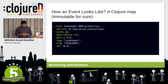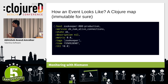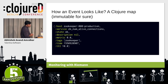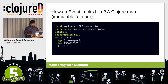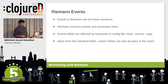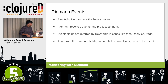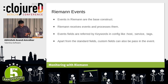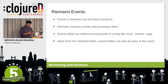This is a simple Riemann event and how it looks — it's a Clojure map, and it's immutable. Events are the base construct in Riemann. Riemann receives events and processes them. Event fields are referred to by keywords in the configuration file — like host, service, tags, etc. Apart from these standard fields, we can also pass our own custom fields as an event.